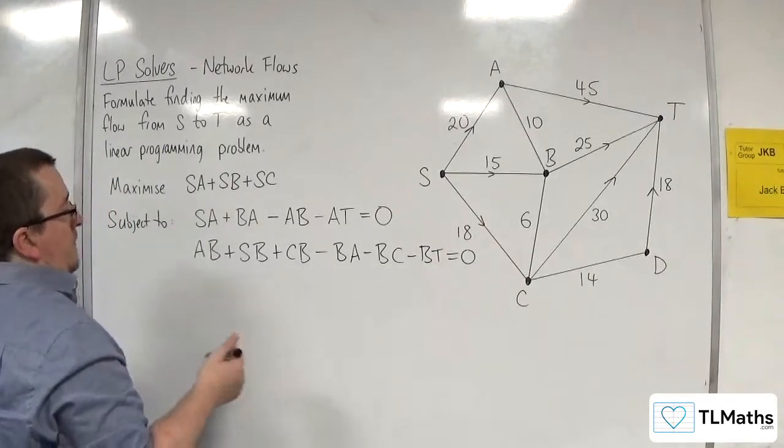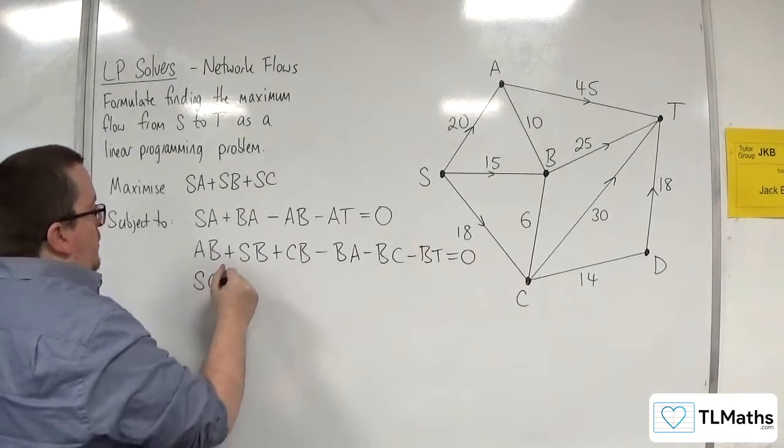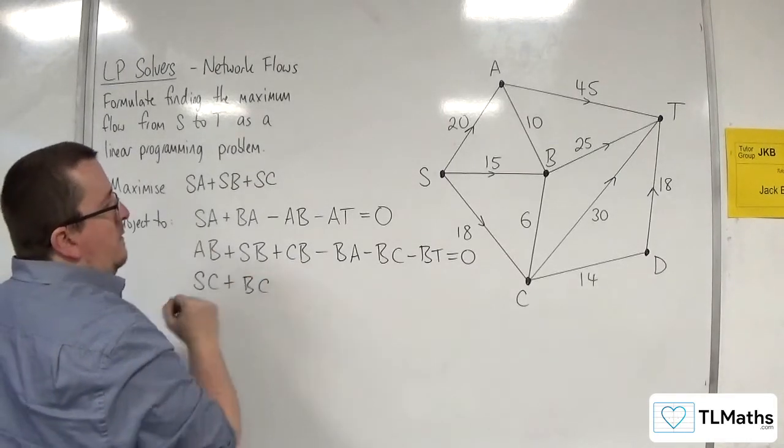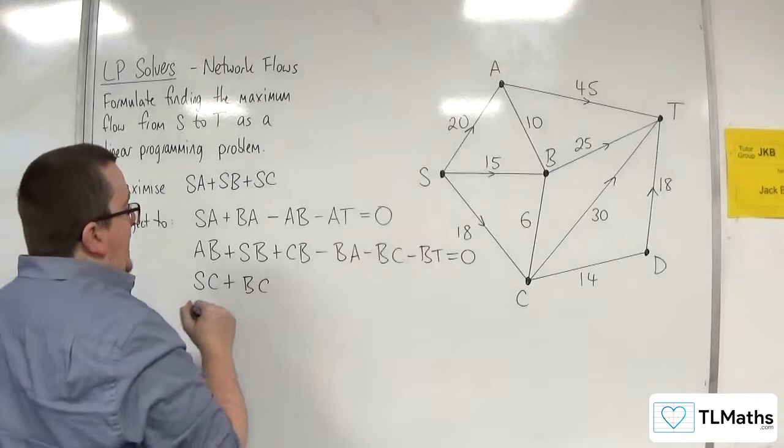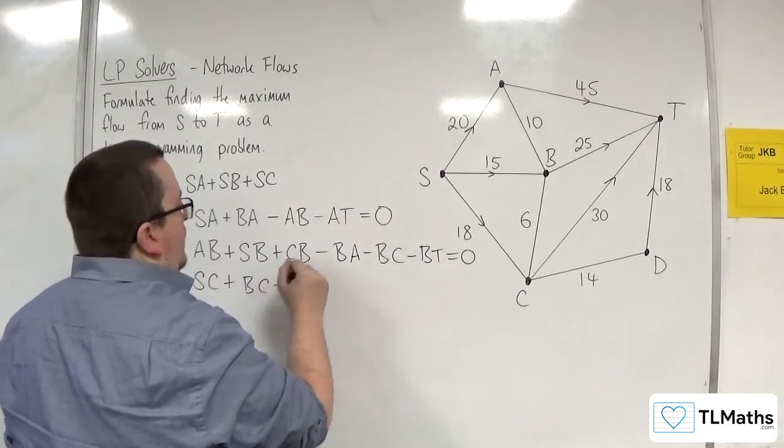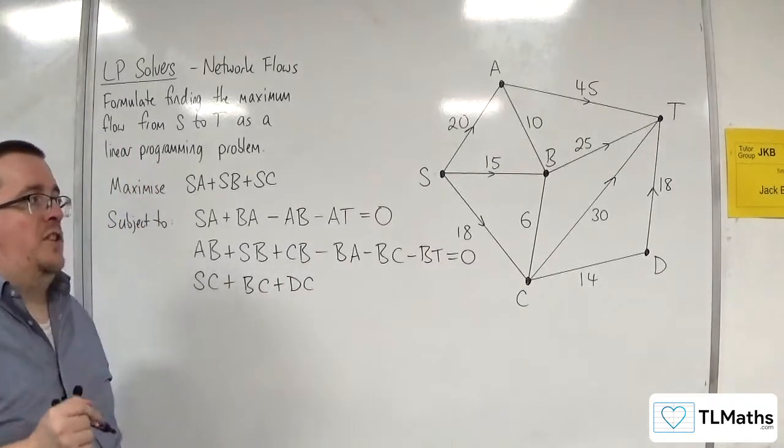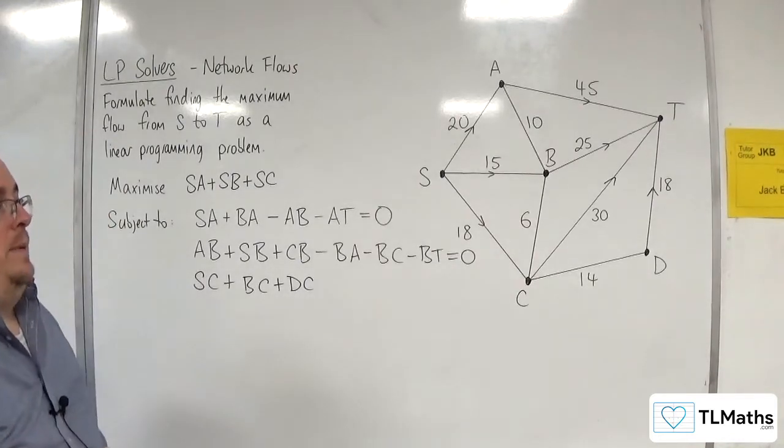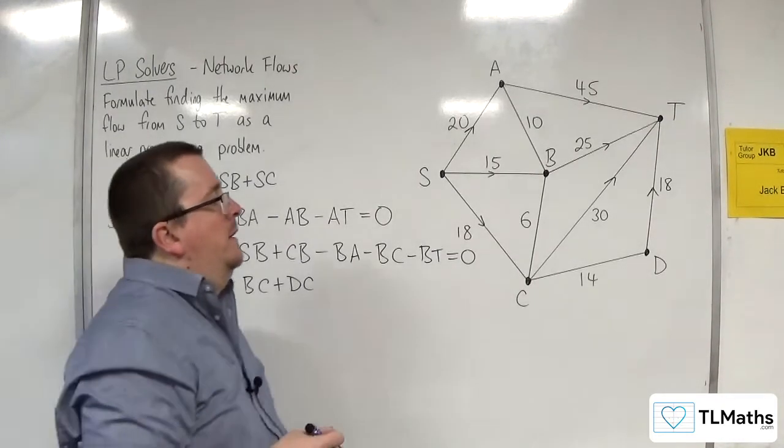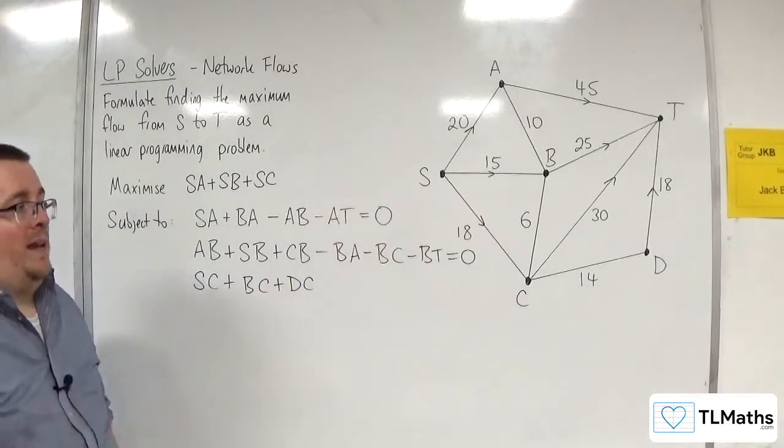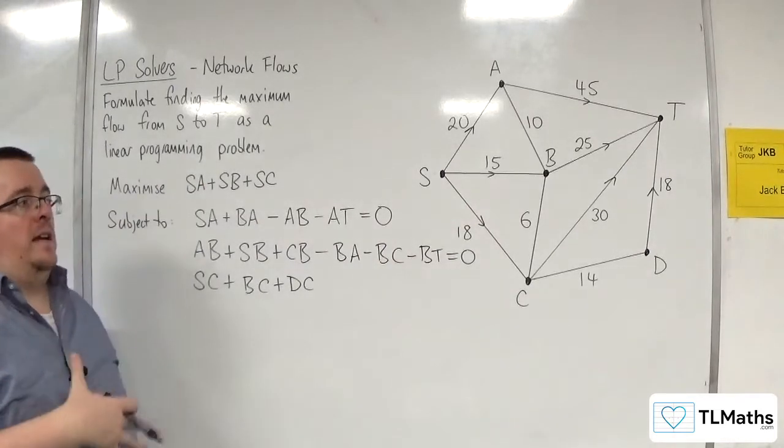Now, for C, we've got SC. We've got BC flowing in. And DC. Now, although DC, it looks like there should be no flow going from D to C, because DT is directed.